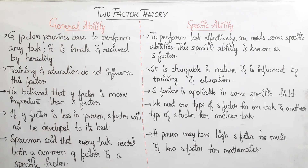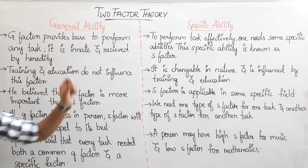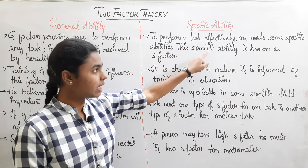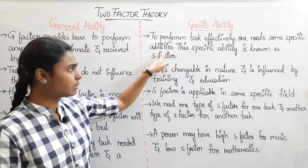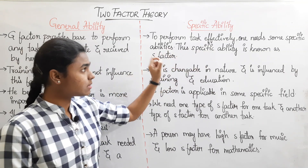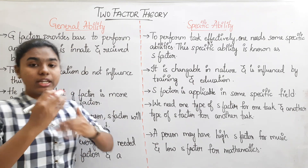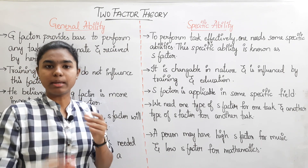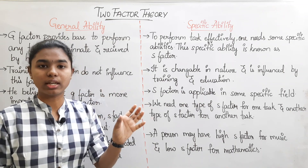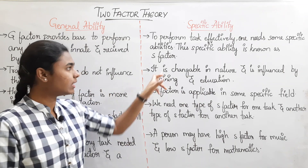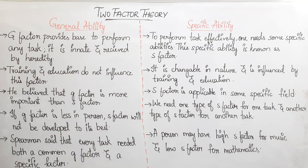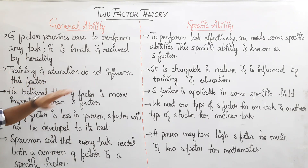Now let's talk about specific ability. To perform tasks effectively, one needs some specific abilities. This specific ability is known as the S-factor. Training and education do not influence the G-factor.